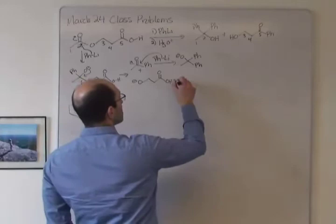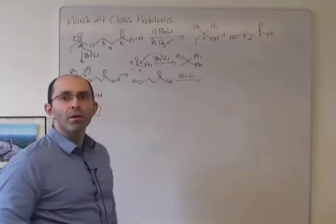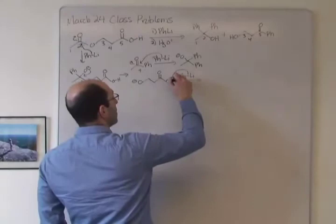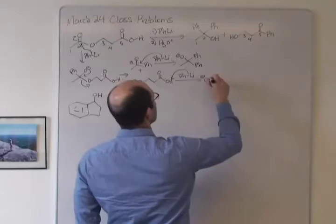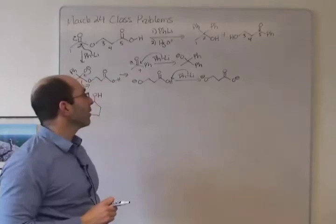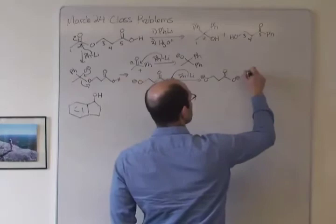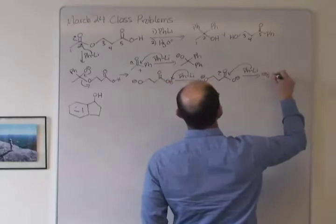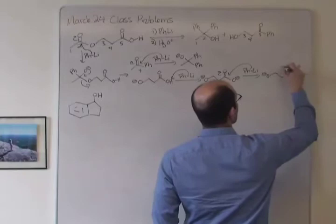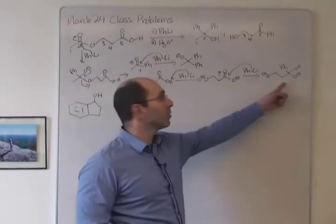Now we look at the other side. Remember, carboxylic acids are acids. Grignard and organolithium hydride reagents are bases, so they're going to grab that proton. That's going to produce benzene and a carboxylate anion. Carboxylate anions are reactive with phenyl lithium, so we get to that point and again we have a stable tetrahedral intermediate — everything's stable at this point.